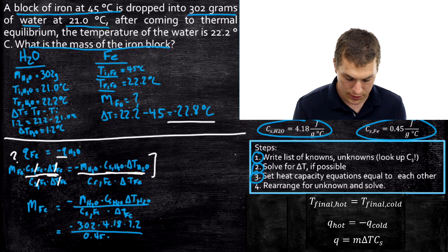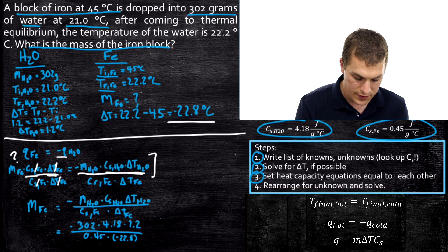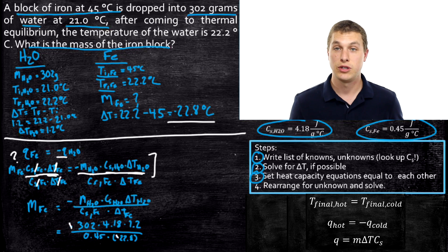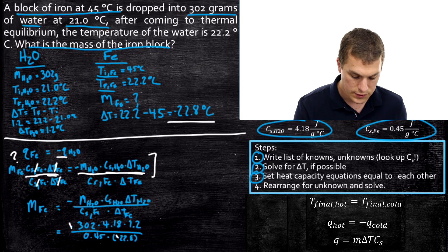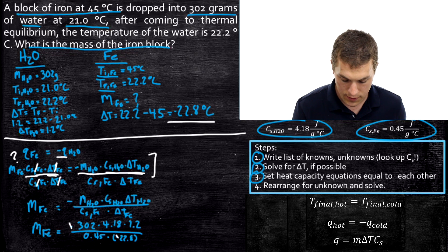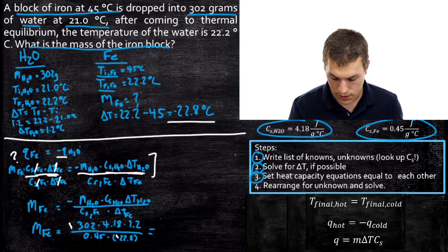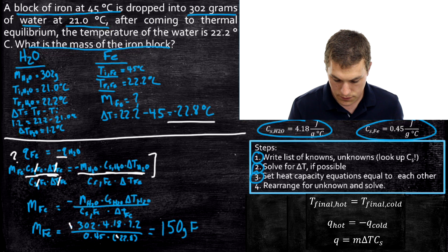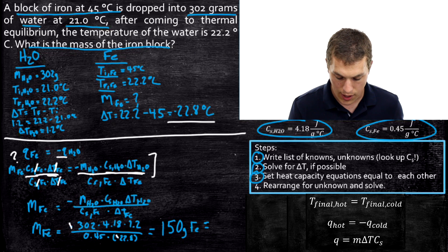We have negative 22.8 degrees Celsius in the denominator, so the two negative signs cancel and we get a positive number — which is good because mass must be positive. When we plug it into our calculator and round to two significant figures, we get 150 grams of iron.